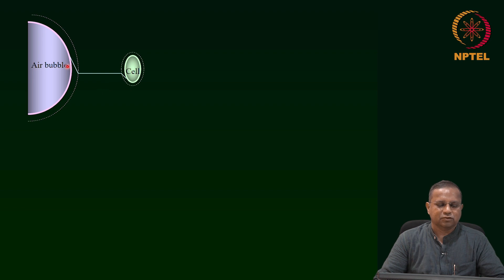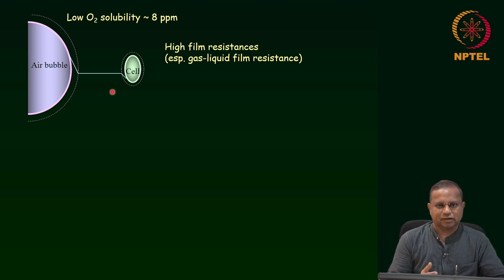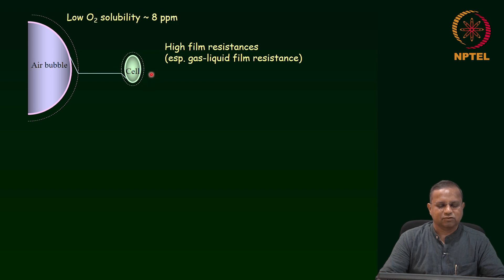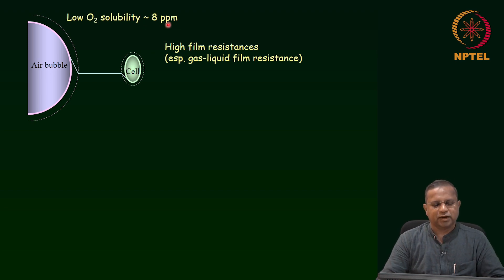We focused on the region which we called the conceptual gas-liquid film — there is no physical film there; it is just the region where the concentration decreases. This film can be viewed as posing a resistance to the transport of oxygen from the gas phase to the liquid phase and ultimately to the cell. There are two fundamental limitations in this process, and that is the reason why oxygen supply at relevant rates to the bioreactor is a big challenge. The high film resistances — particularly the gas-liquid film resistance — mean you cannot supply oxygen at rates necessary for cellular culture.